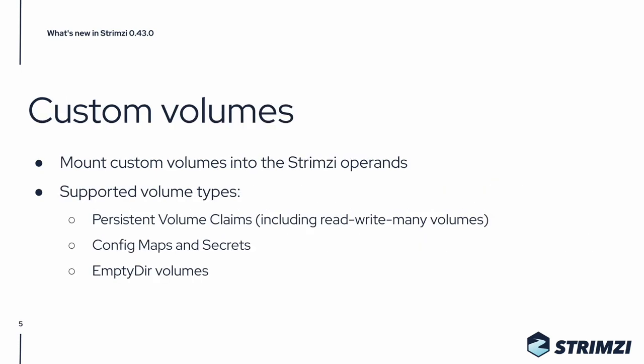Outside of KRaft, the main new feature is support for custom volumes. You can now specify custom volumes which will be mounted into any of the Strimzi operands. The supported volume types currently include persistent volume claims, config maps and secrets, or emptyDir volumes. This is a feature which many users were asking for and it was also contributed by our users. Use cases include using the volumes for storing logs, using them for tiered storage, or using them with various Kafka Connect connectors.